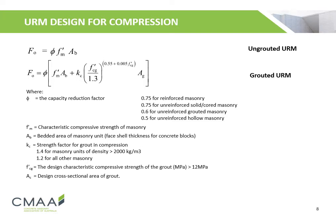Here we have two equations for determining the compressive capacity for ungrouted and grouted unreinforced masonry, where phi (φ) is the capacity reduction factor, F-M is the characteristic compressive strength of masonry, AB is the bedded area of the masonry unit, Kc is the strength factor for grout in compression, F-Cg is the design characteristic compressive strength of the grout, and AC is the design cross-sectional area of the grout.